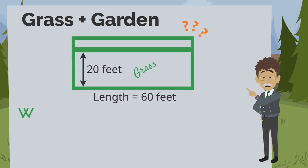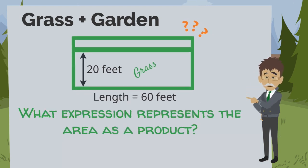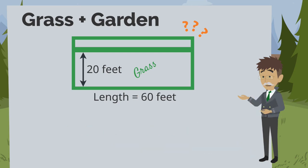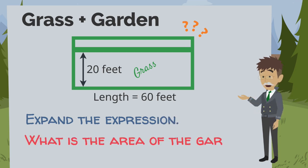Write an expression representing the entire rectangle's area as a product. What is the area of the part with grass? Apply the distributive property of multiplication over addition to expand your expression. What is the area of the garden component?